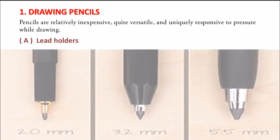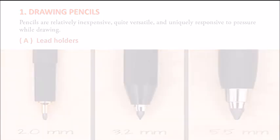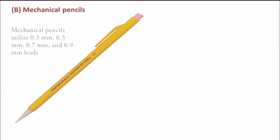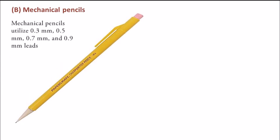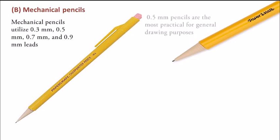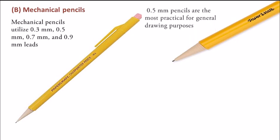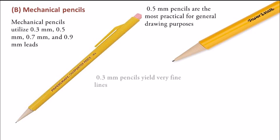Different types of lead holders are 2mm, 3.2mm, and 5.5mm wide. Then there are mechanical pencils. Mechanical pencils utilize 0.3mm, 0.5mm, 0.7mm, and 0.9mm leads. 0.5mm pencils are most practical for general drawing purposes. 0.3mm pencils yield very fine lines.